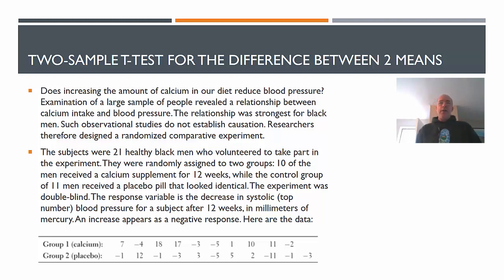Here's the experiment. Subjects were 21 healthy black men who volunteered to take part in the experiment. They were randomly assigned to two groups. Ten received a calcium supplement for 12 weeks. The other received a placebo that looked identical for the 12 weeks. The experiment was double-blind.